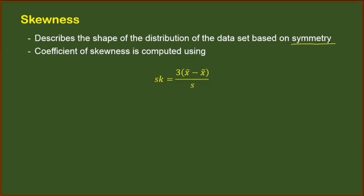We have SK or the skewness equals 3 times the quantity of the mean minus median, and then that product is divided by the standard deviation. After computing, we will be interpreting the number or the coefficient of skewness that we arrived at using this guide. So there are three different types of skewness based on the coefficient of skewness that you have computed.